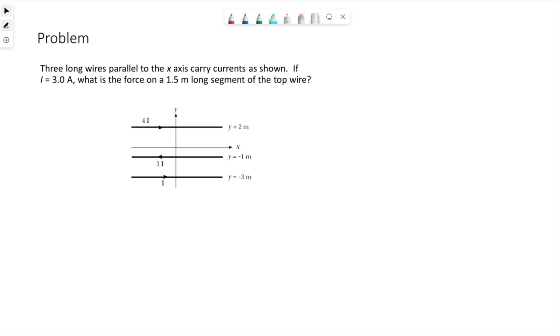So the magnetic force due to parallel wires looks like this: mu-naught i1 i2 times the length of the wire over 2 pi d, where d is the distance between the wires. So this top wire is going to experience a force from wire in the middle.